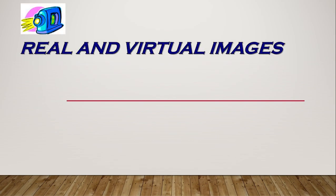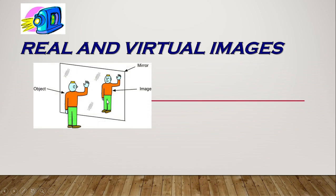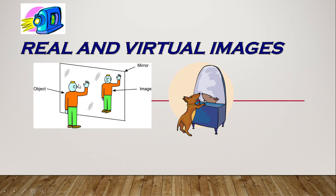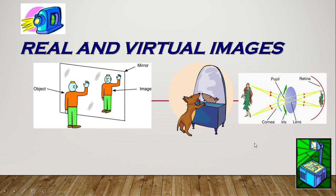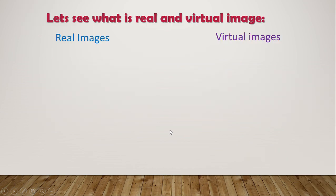Hello students and friends, I'm back with a new video. Today we'll be talking about something very interesting: real and virtual images. The image formed here is a virtual image because you can see it is upright. The image formed on the retina is an inverted image. We'll be talking about real and virtual images in more detail today.